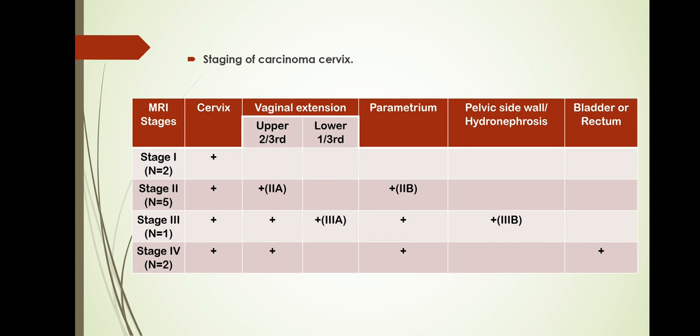This is the staging of cervical carcinoma depending upon the involvement of the part. Stage 1 is limited to the cervix. Stage 2 involves vaginal extension up to the upper two-thirds, divided into 2A (upper two-thirds of vagina only) and 2B (if parametrium is involved). Stage 3 involves the lower one-third of the vagina (3A); if the pelvic sidewall is involved or hydronephrosis is present, it is staged as 3B. Stage 4 means the bladder or rectum may be involved.